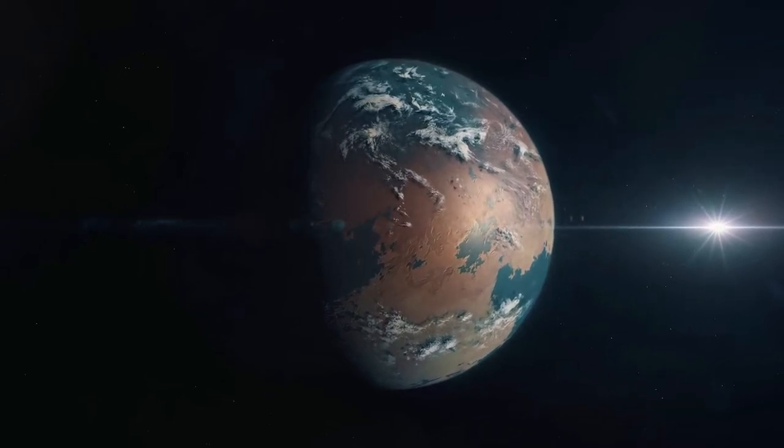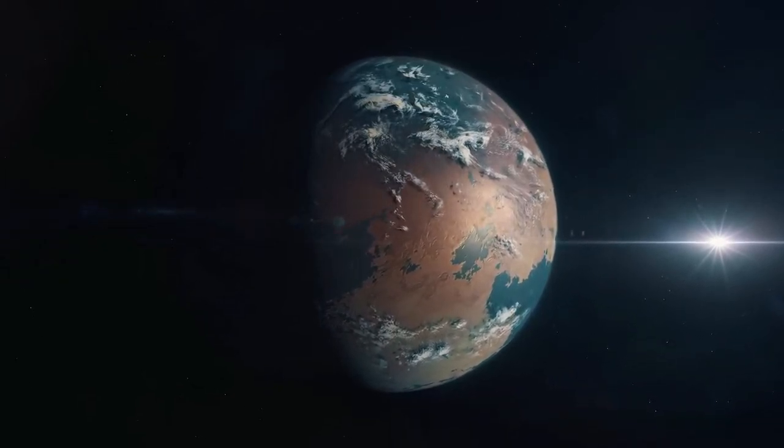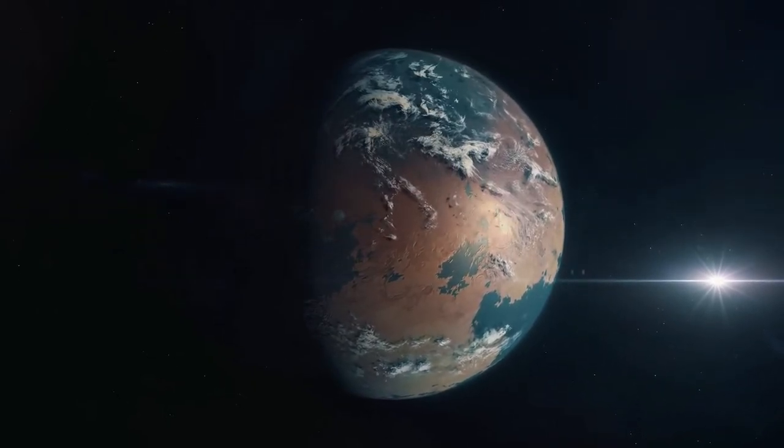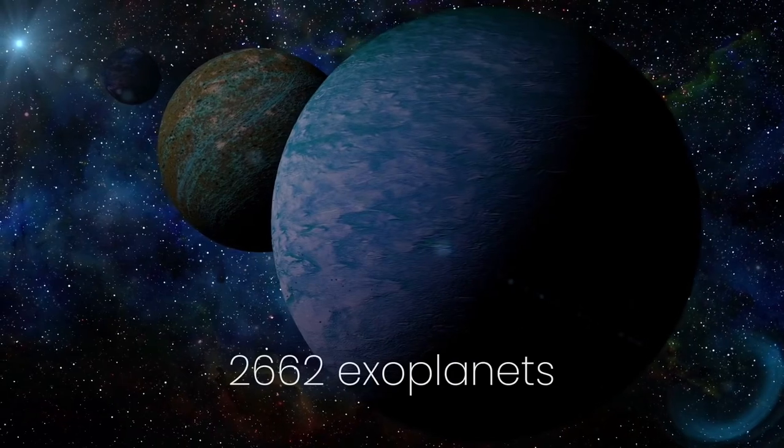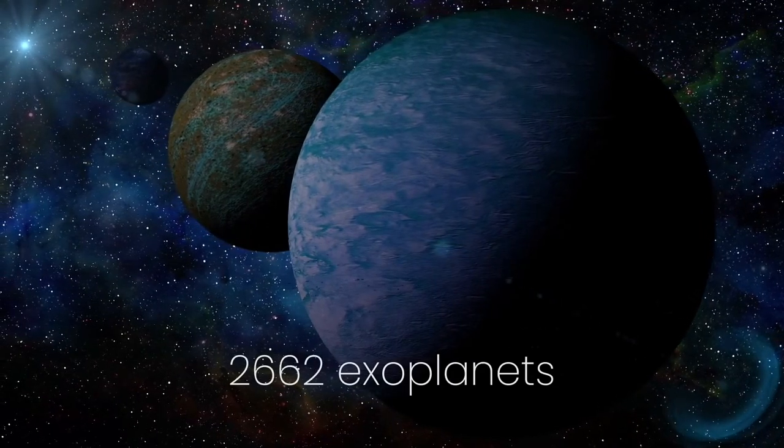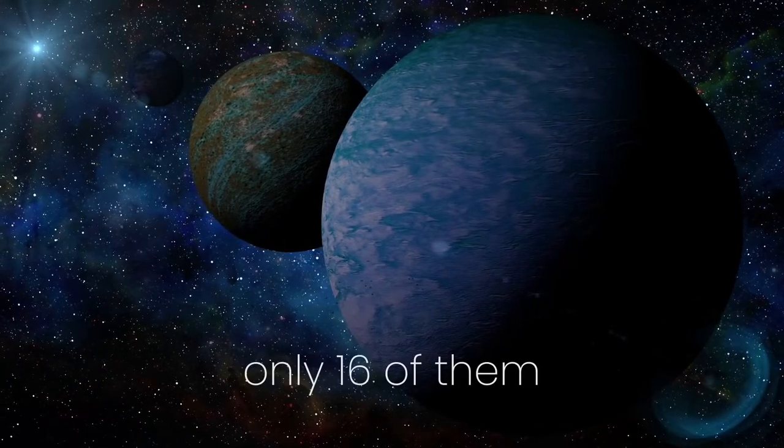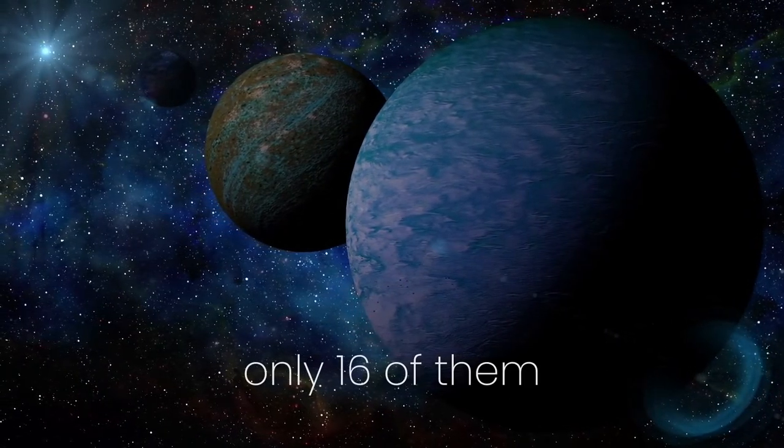Kepler-1649c provides yet another example of an Earth-sized planet in the habitable zone of a red dwarf star. But before we get ahead of ourselves, it's important to note that out of the 2,662 exoplanets identified by Kepler, only 16 of them lie inside the Goldilocks zone. And out of the 16, some of these planets are tidally locked with their parent stars.